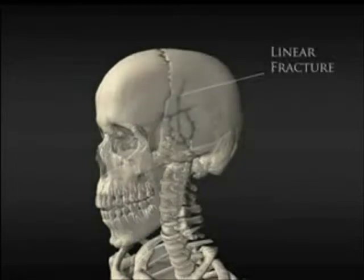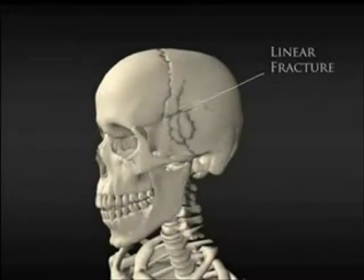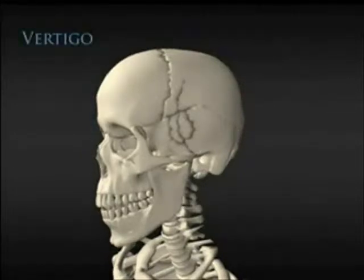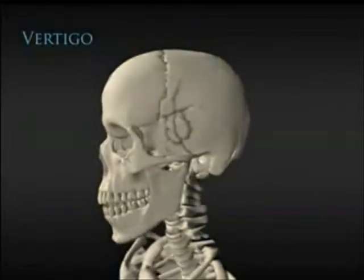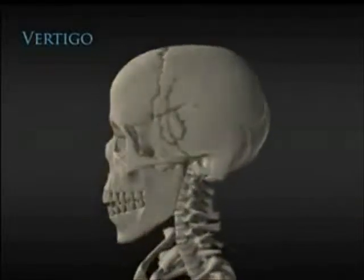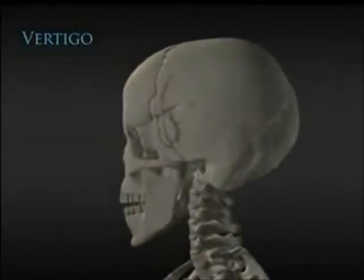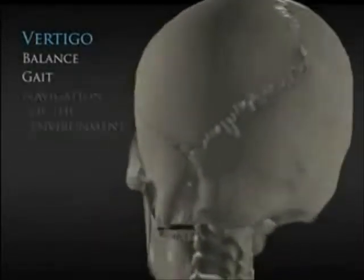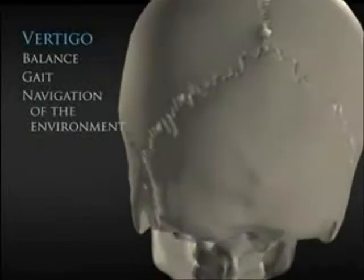The linear fracture of the skull extends downwards towards the ear and then immediately towards the base of the skull. Vertigo is defined as an abnormal sensation of rotary movement associated with difficulty in balance, gait, and navigation of the environment.